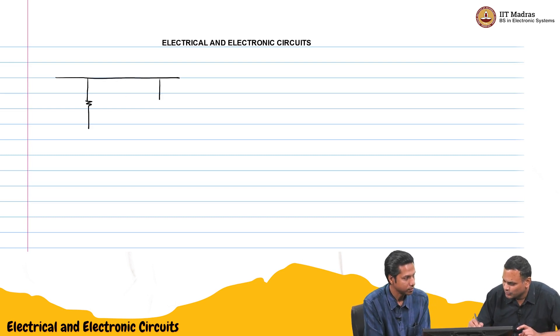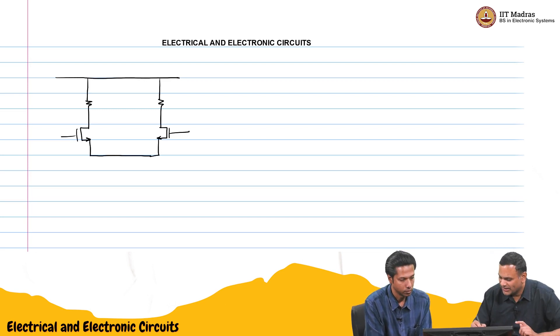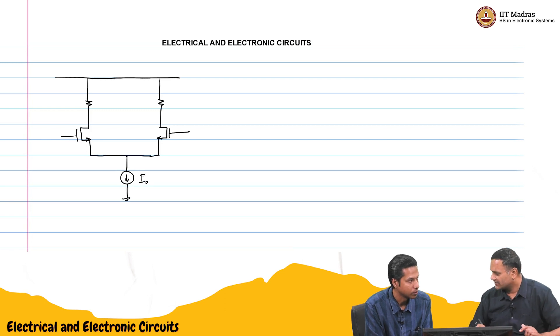So, it looked a little bit like two common emitter amplifiers. In this case, it will look like two common source amplifiers. And we saw that there is a current source to bias it. So, some I naught we said and we said these are two identical devices.